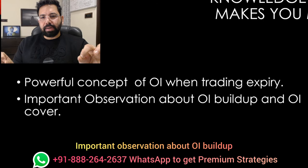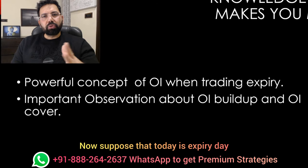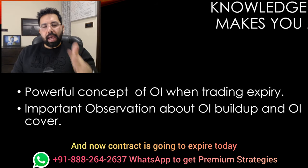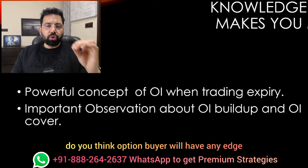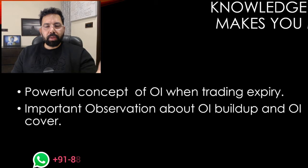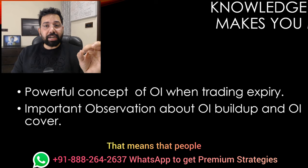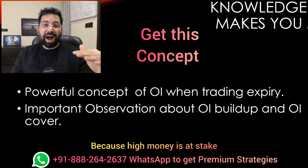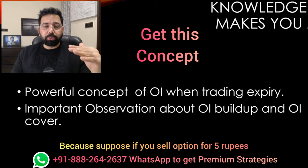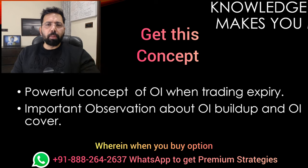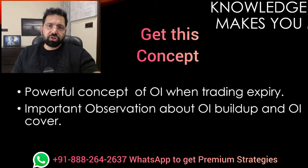Important observation about OI buildup — OI means open interest cover. Suppose today is expiry day. For people who trade US markets, suppose it's zero DTE, and our contract is going to expire today. In the morning, do you think the option buyer will have any edge? Option buying can happen with 500 rupees even. But option selling — naked selling — will cost a lot of money. That means people who sell in wholesale, not retail, are definitely the more powerful people, because high money is at stake. If you sell an option for 5 rupees, that option can become 100 — there is a possibility. But when you buy an option, the 5 rupee option can only become zero, so you already know your loss is limited.